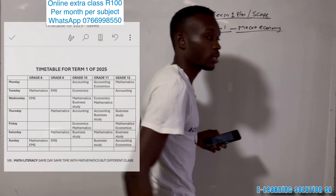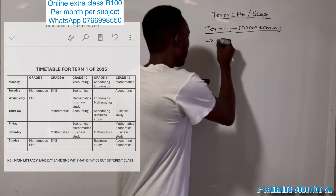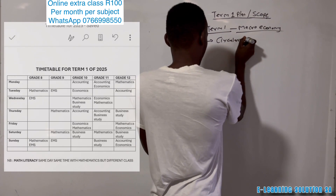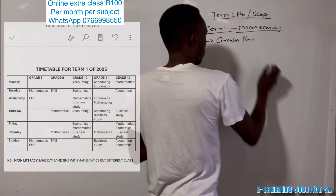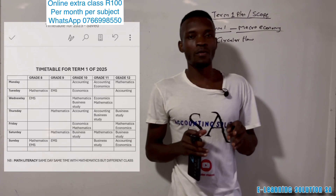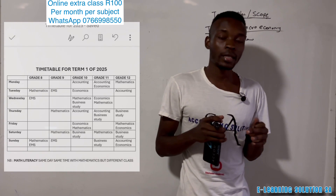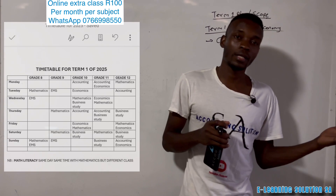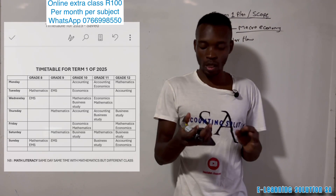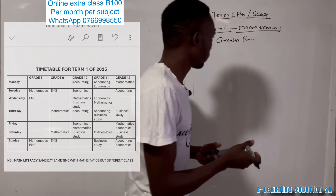The first topic is the most simple topic — one that most of you love from Grade 10 — called the circular flow. This one can be easy, but in Grade 12 this essay can be set differently from Grade 10 and Grade 11, so you must read the question very carefully.